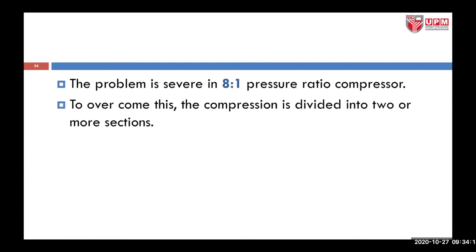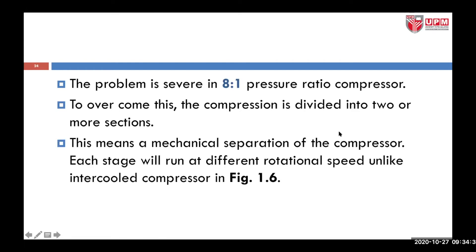To overcome this, whenever you decide to still use an axial type compressor, the compression is divided into two or more sections. This means a mechanical separation of the compressor, so each stage will run at a different rotational speed, unlike the intercooled compressor in Figure 1.6 that we looked at before.